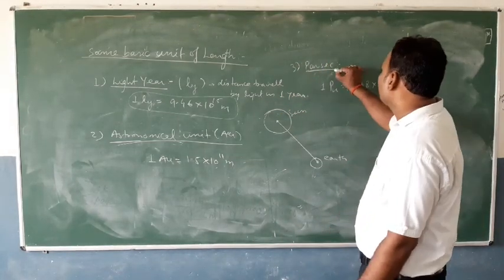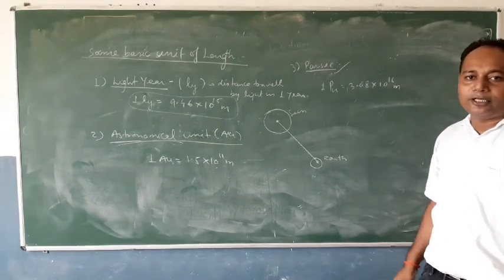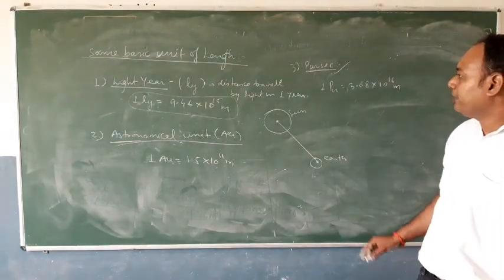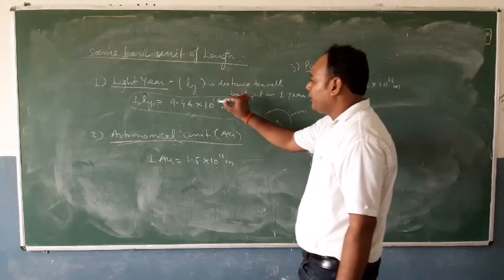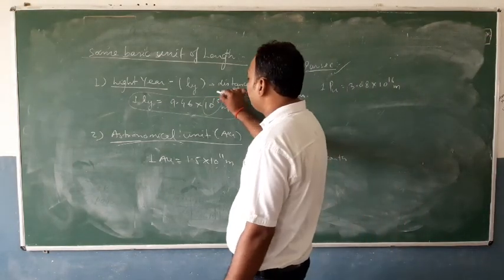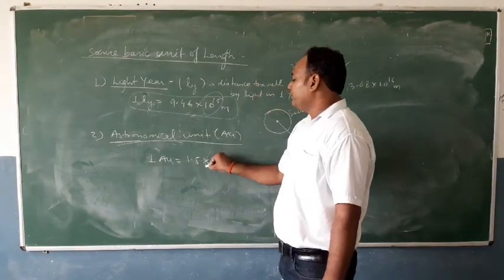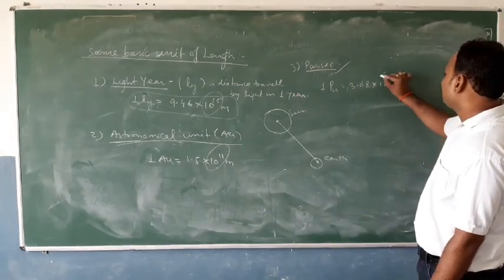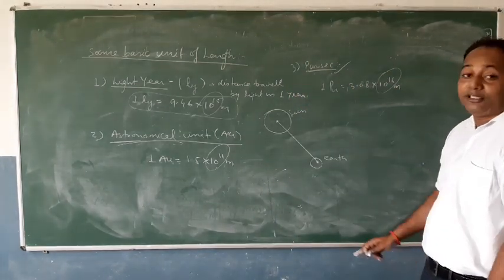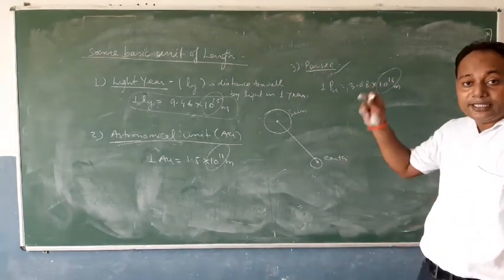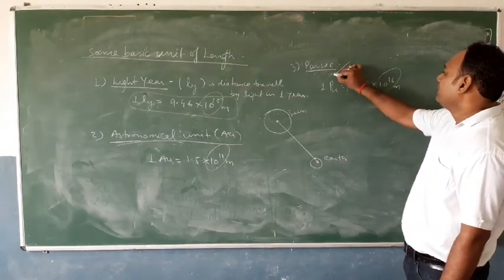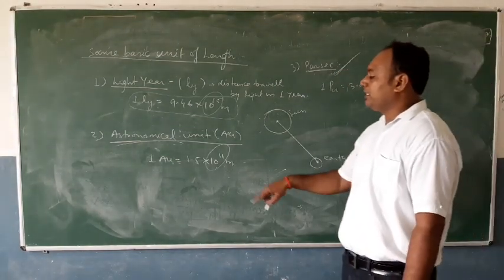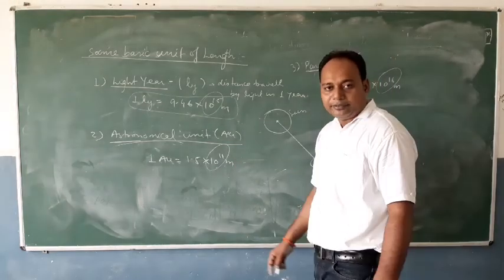The third unit is the parsec, which also measures large lengths. To summarize the orders of magnitude: the light year is of the order 10¹⁵ meters, the astronomical unit is of the order 10¹¹ meters, and the parsec is of the order 10¹⁶ meters — so the parsec is the largest of the three.